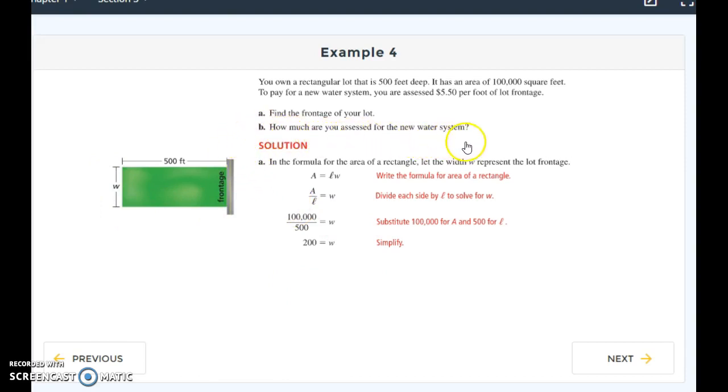So then the second part of the problem is how much are you assessed for the new water system? Well, I know I'm assessed at $5.50 per foot. So then I can continue to go here. So each foot of frontage costs $5.50. So I can set this up as my simple equation that it's $5.50 per foot. And I know that I have 200 feet. And then I see I have feet in the denominator and feet in the numerator. So those units cancel. And I can multiply straight across. So I end up that my total assessment is $1,100.